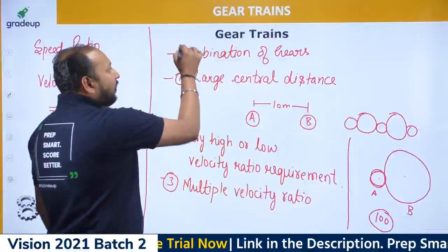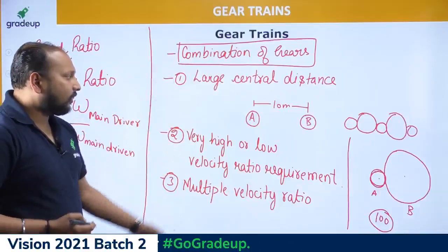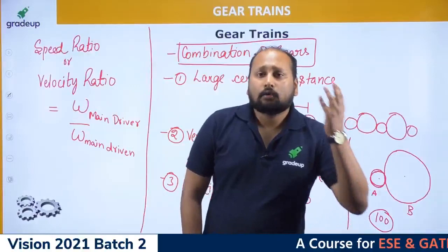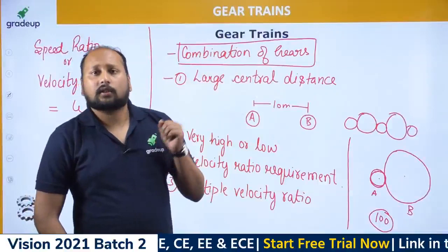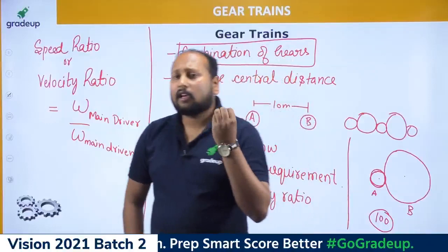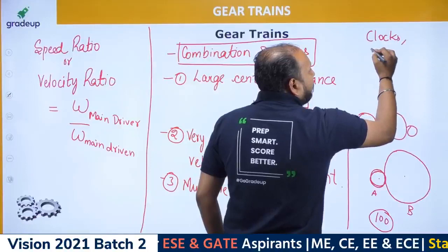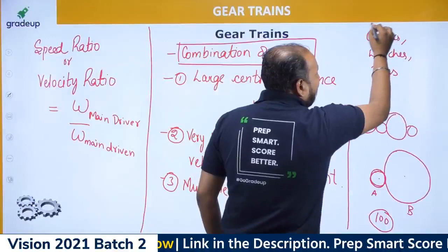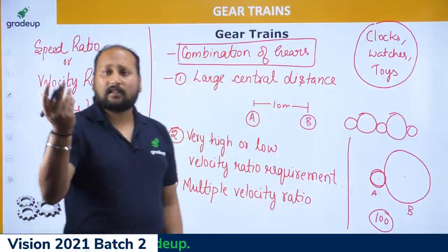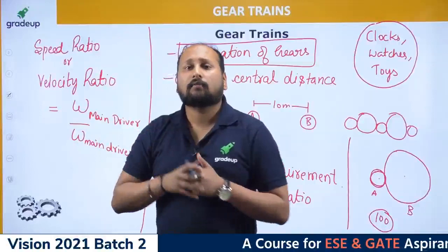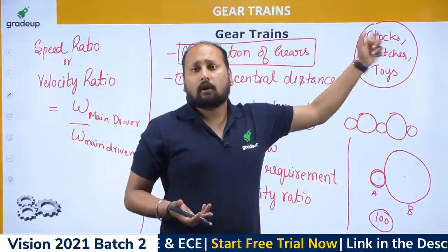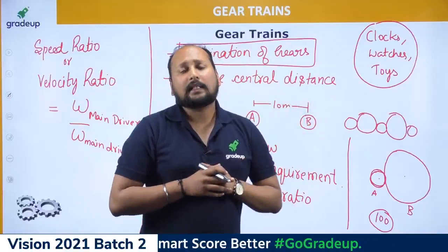So these three are the applications of gear trains: large central distance, high or low velocity ratio, and multiple velocity ratios. Practical examples of gear trains in daily life include clocks, watches, and toys. Inside a hand watch you can see a system of gears — these are known as gear trains.